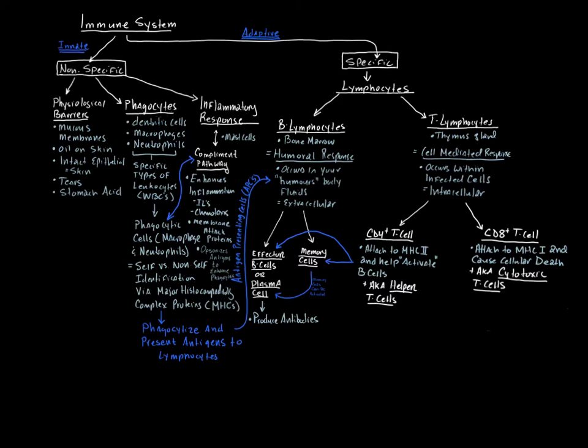There are basically two major components to the immune system. You have your nonspecific immune system and your specific immune system. The nonspecific immune system is also known as the innate immune system. The specific component is also known as adaptive immunity, and this is the part where memory plays a significant role.